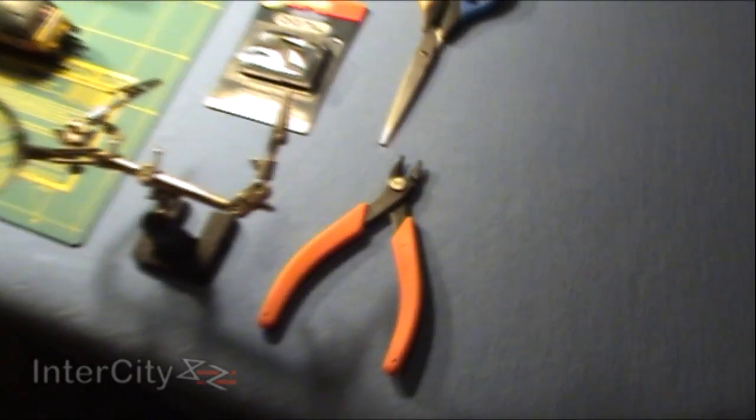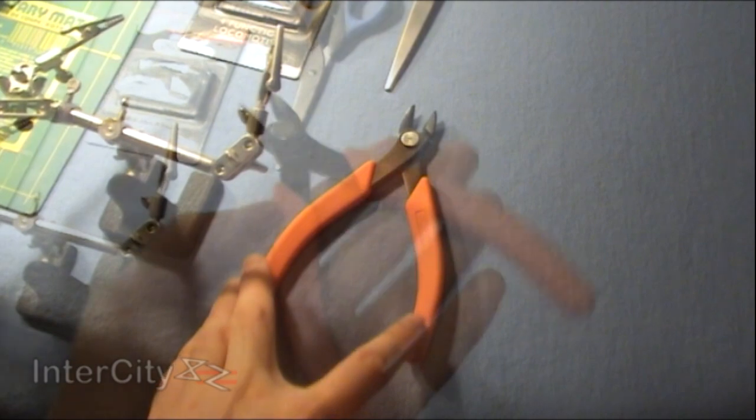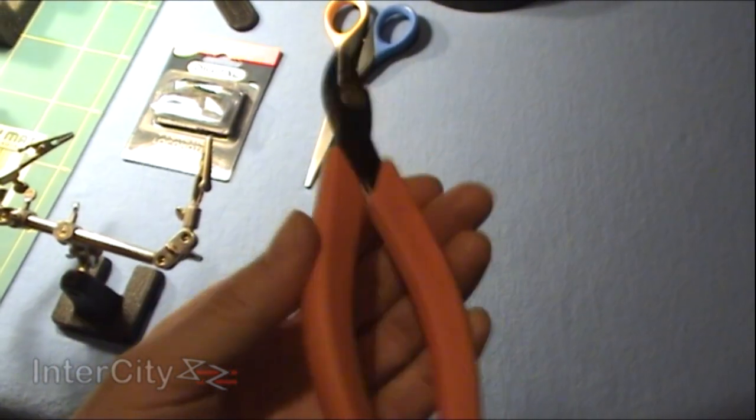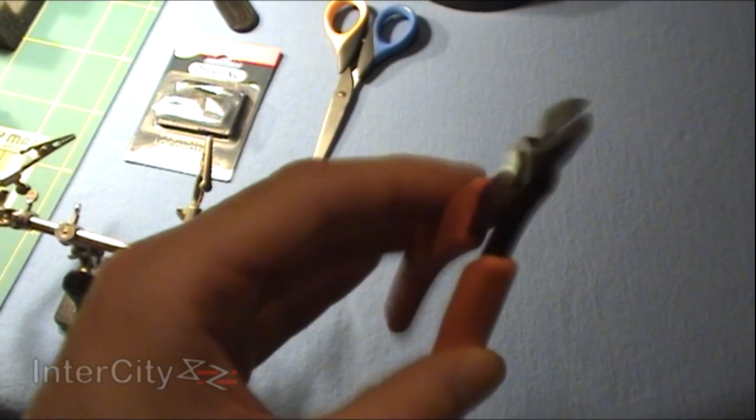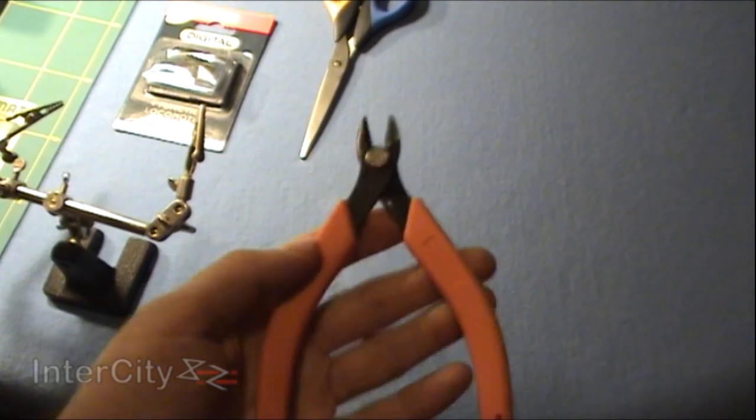Working our way from right to left, first we've got these Xuron track cutters. They're incredibly powerful cutters, but you can use them for cutting anything—plastic airfix kits or wire. They'll cut through plastic and metal with ease.